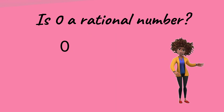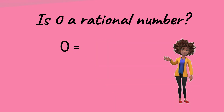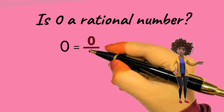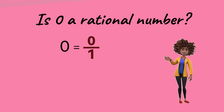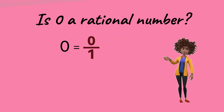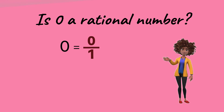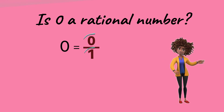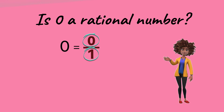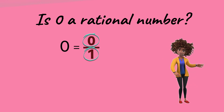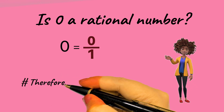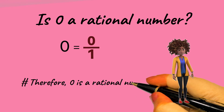Is 0 a rational number? Yes, 0 is a rational number. The number 0 can be written as 0 over 1, where 0 is the numerator and 1 is the denominator. Since both the numerator and denominator are integers and the denominator is not 0, the number 0 is considered a rational number.